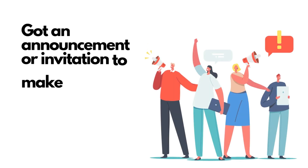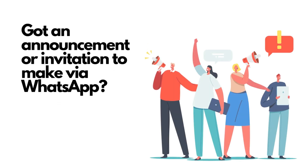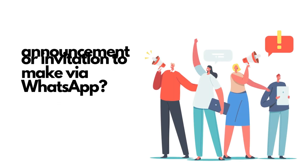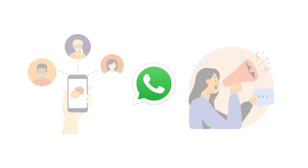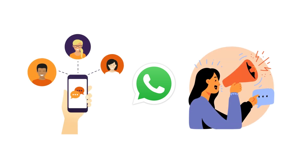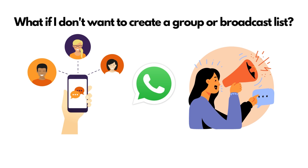Got an announcement to make or sending an invitation to people across your contact list? Currently in WhatsApp Web, users will have to create group chats or broadcast lists to achieve this. But what if we tell you there is a better and easier way without creating these?